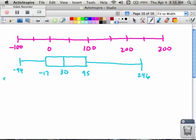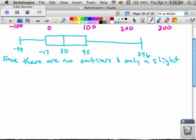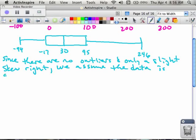So when I connect this, it looks like it's slightly skewed right. So since there are no outliers and only a slight skew right, we assume the data is approximately normal.